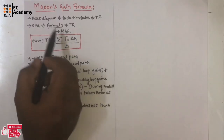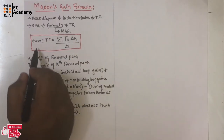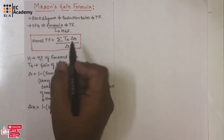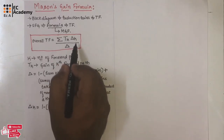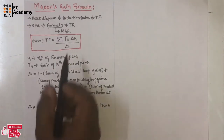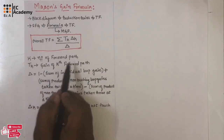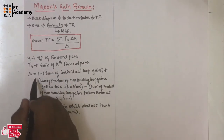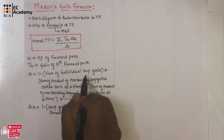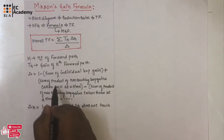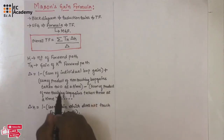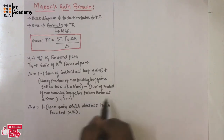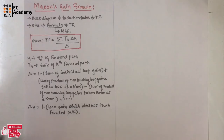This formula is known as Mason's Gain Formula. Mason's Gain Formula states that the overall transfer function is equal to the summation of T_k into delta_k divided by delta. Delta is equal to 1 minus the sum of individual loop gains, plus the sum of products of non-touching loop gains taken 2 at a time, minus the sum of products of non-touching loop gains taken 3 at a time, plus and so on.